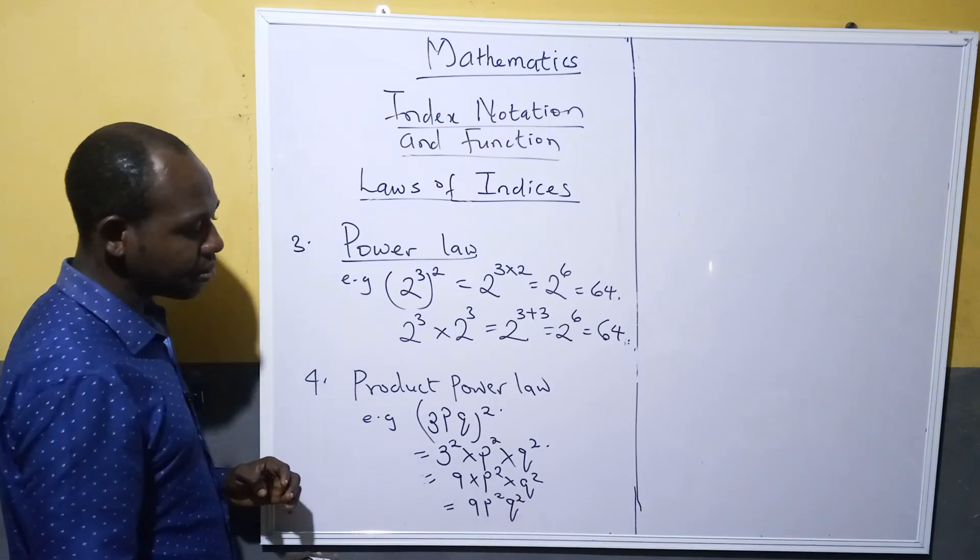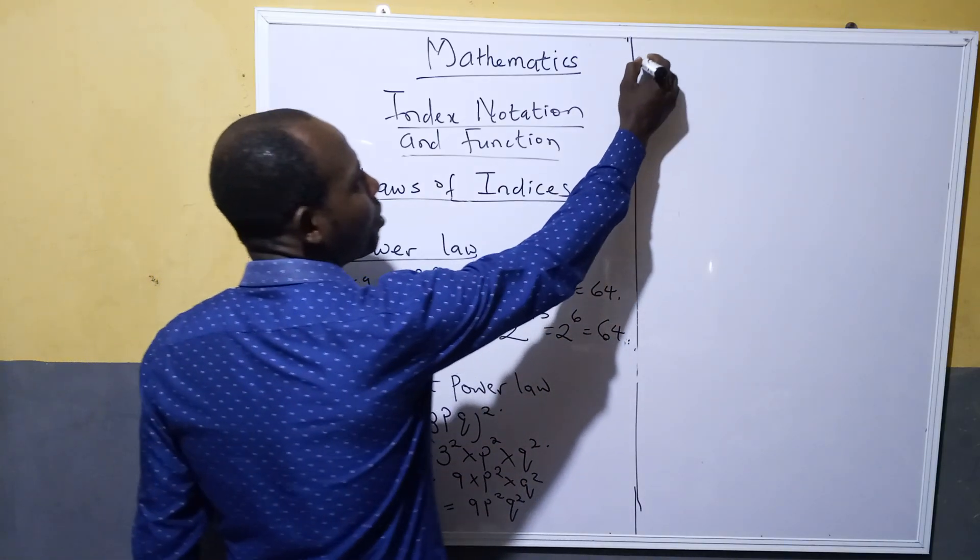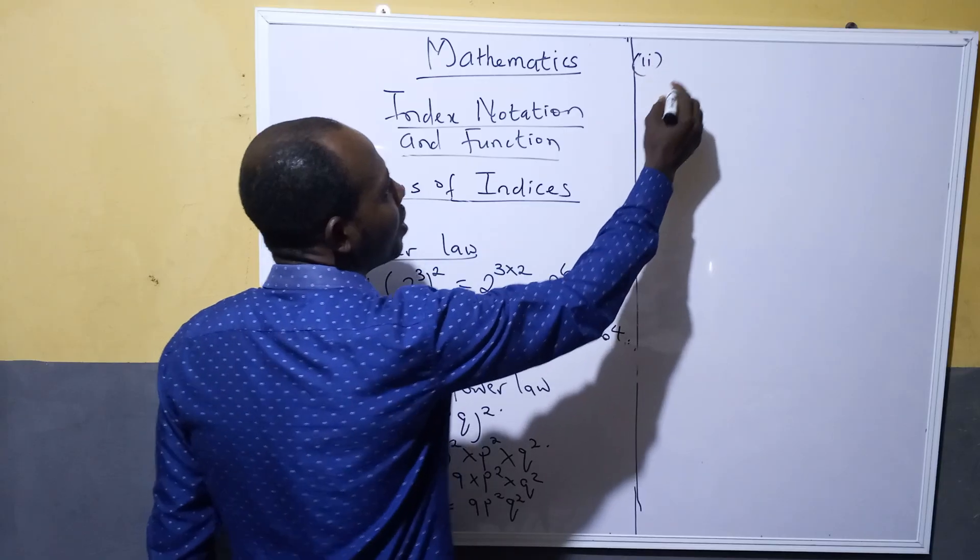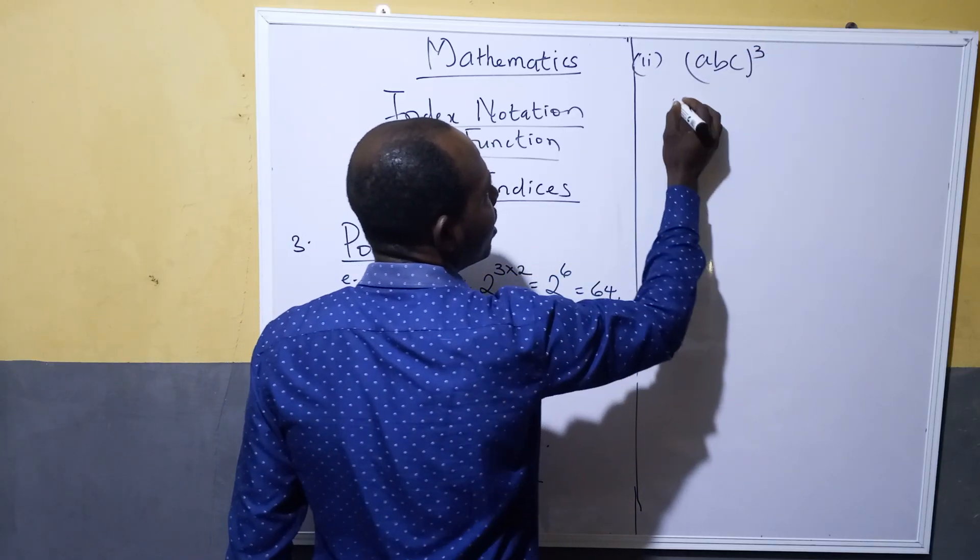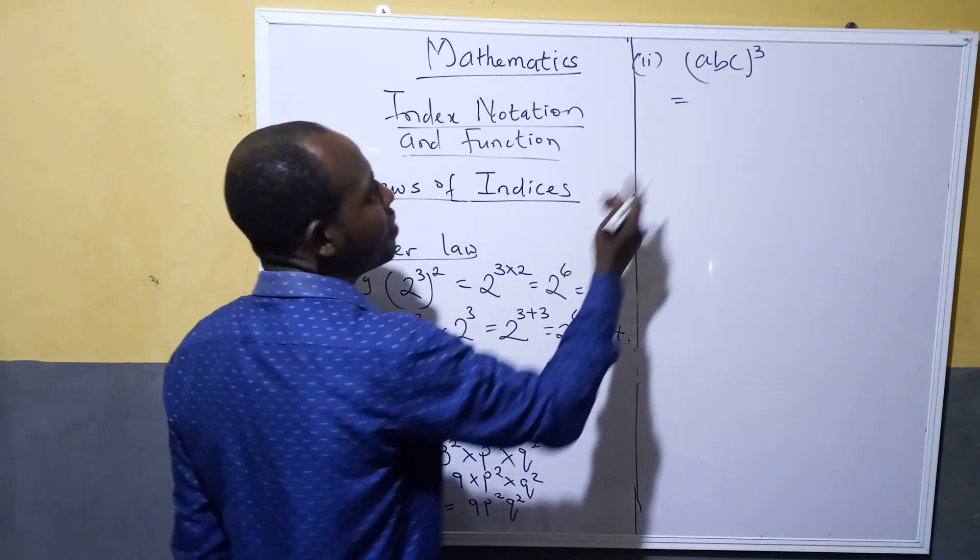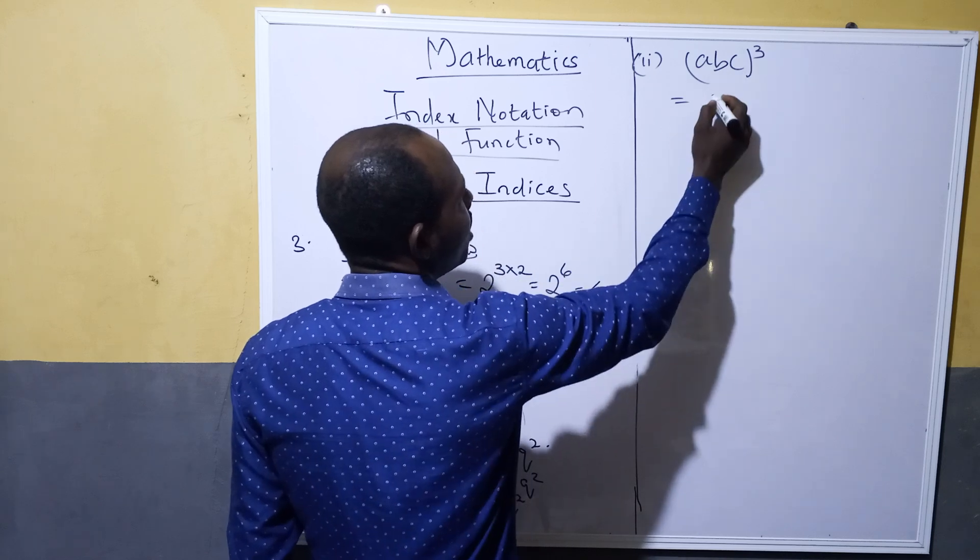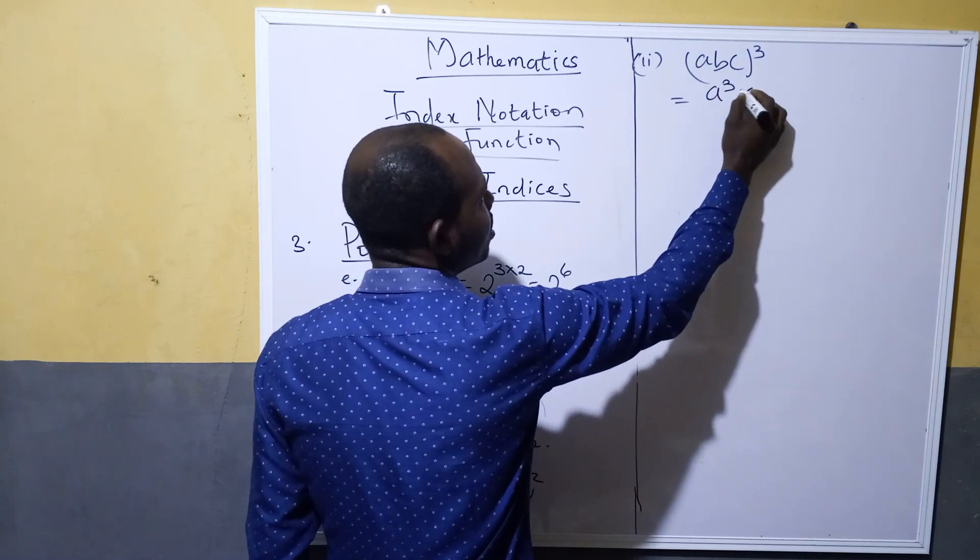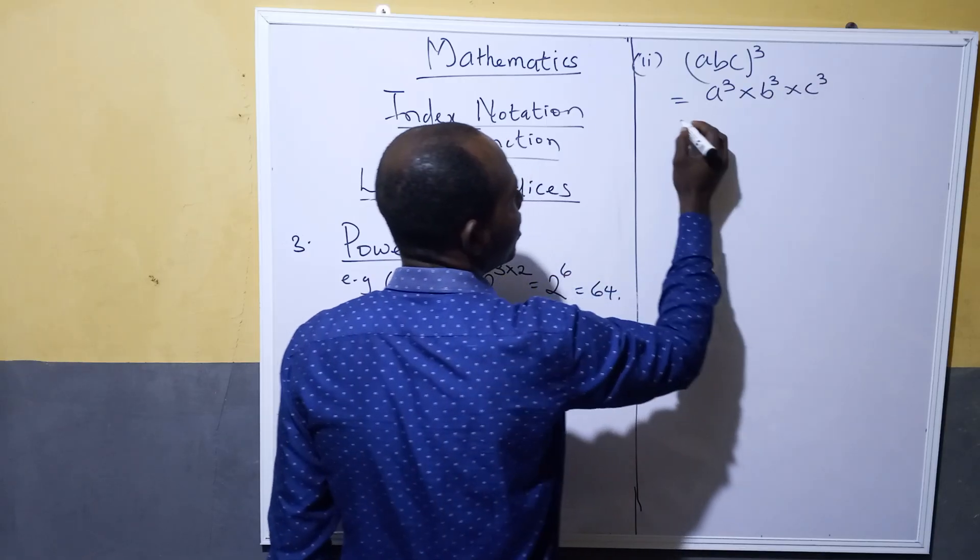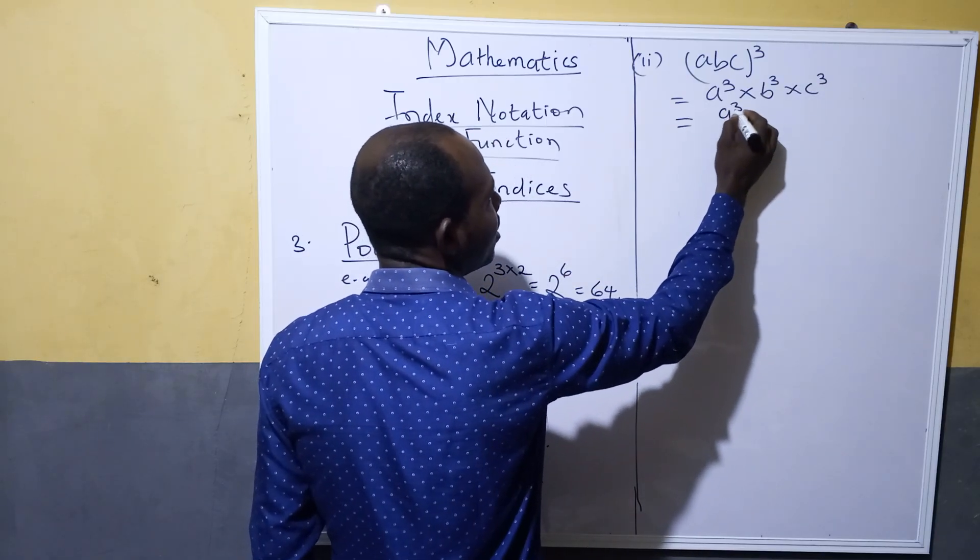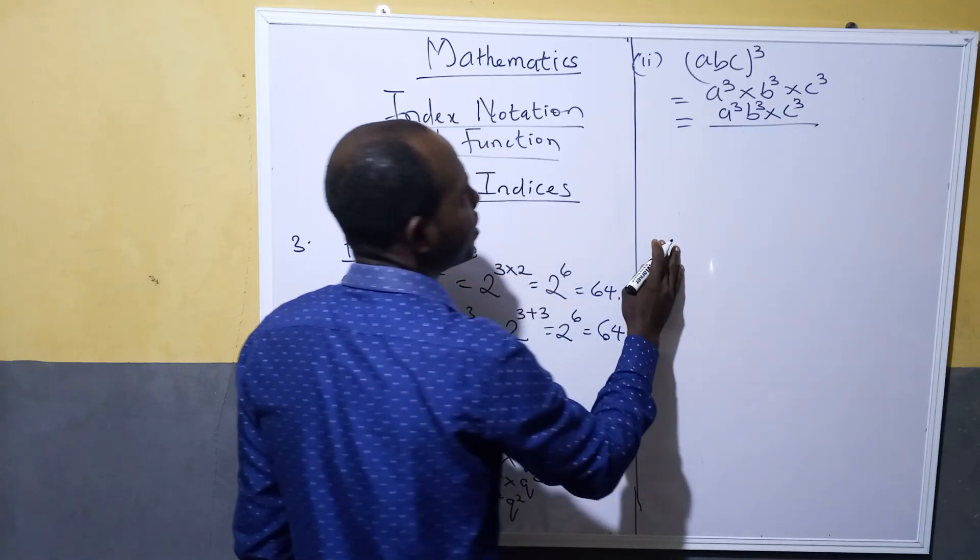That is all about product power law. Let's take another example: if you have (abc) raised to power 3, then it simply says raise each of these alphabets to 3. We have a³ multiplied by b³ multiplied by c³, which gives you a³b³c³.